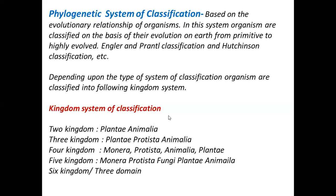In the phylogenetic system, there is cytotaxonomy — a comparative cytological study of cells, chromosomes, structure, and meiotic behavior and division. There is chemotaxonomy, which involves the biochemical study of amino acids, proteins, and DNA sequences. There is also numerical taxonomy, which studies the percentage of similarities and dissimilarities between organisms.